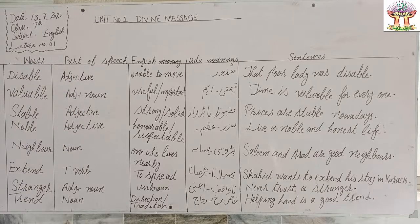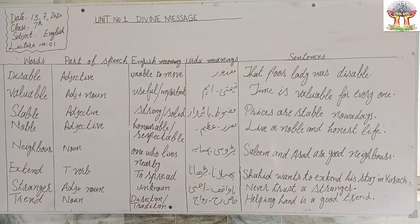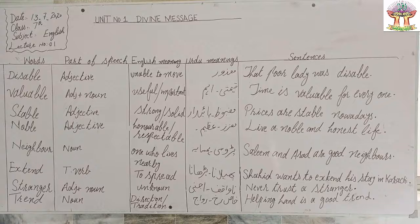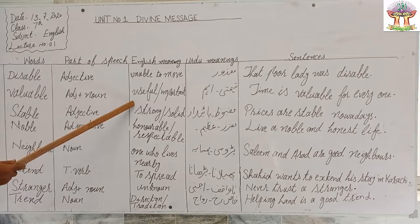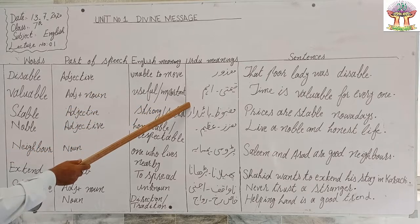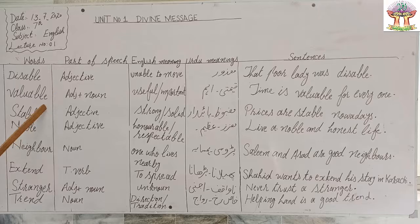These are the difficult words of this unit. They include parts of speech, English meanings, Urdu meanings, and sentences. You have to write them in your notebook. Make four columns on a page: words, parts of speech, English meanings, and Urdu meanings.